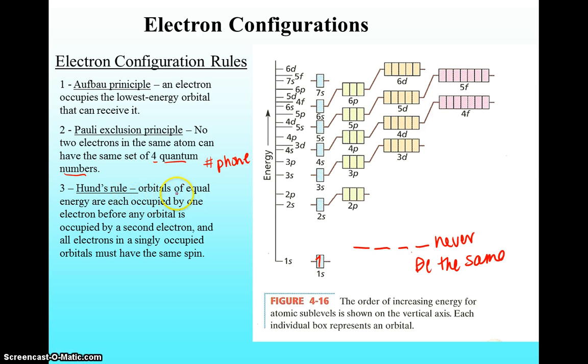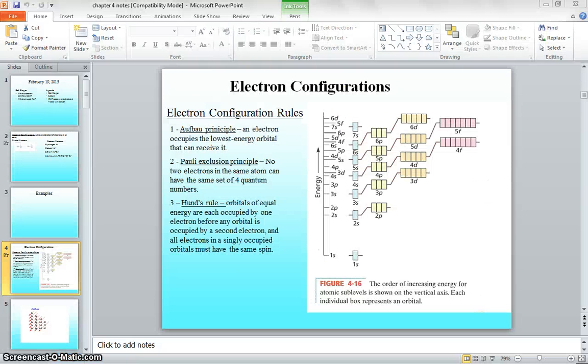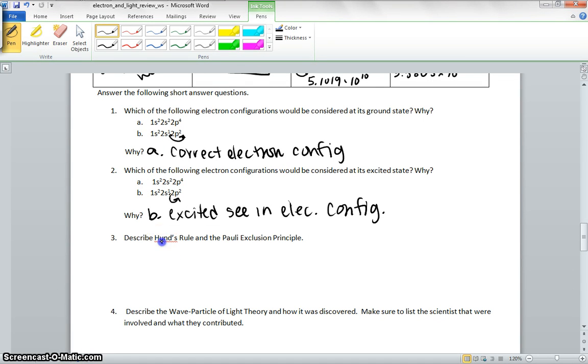And the Hund's rule we talked about, the Hund's rule says that orbitals of equal energy can be occupied by one electron orbital before each is occupied by its second. So that's the rule we were talking about, the p orbitals, and each one has to get one electron before it gets its pair.